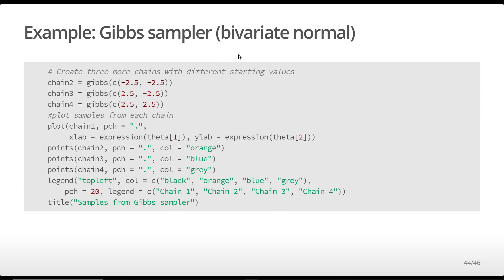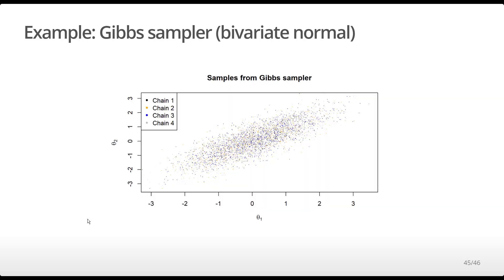I now run three more chains with three different starting values. I then use the following commands to combine the results into one plot, using color to distinguish the results of the different chains. The plot looks similar to before, but with more data since we've combined all of the chains.